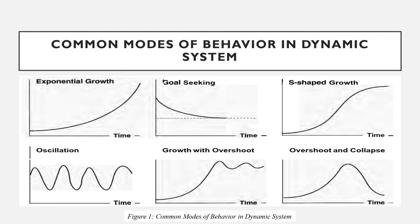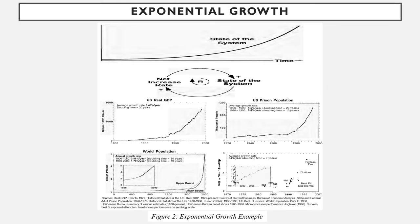Figure 1 provides an example of the common modes of behavior in a dynamic system. Figure 2 provides an example of exponential growth. Exponential growth arises from positive self-reinforcing feedback. The larger the quantity, the greater its net increase, further augmenting the quantity and leading to even faster growth.